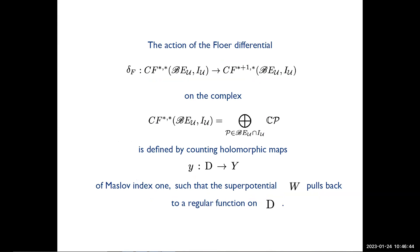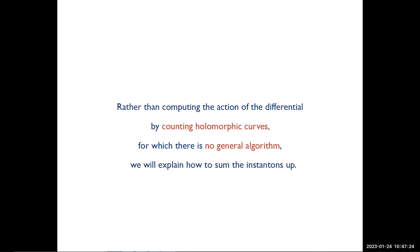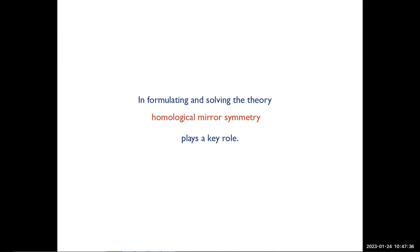The action of the Floer differential on the Floer complex is defined by counting holomorphic maps from a disk to Y of Maslov index 1, such that the superpotential W pulls back to a regular function on the disk. I remind you that the choice of top holomorphic form matters: it's important that the corresponding symplectic form is compatible with omega in the sense that the real volume form you get from omega wedge omega-bar is proportional to the one you get from the symplectic form. Rather than computing the action of the Floer differential by counting holomorphic curves — for which there is no general algorithm — we'll explain how to solve this. In formulating the entire theory, homological mirror symmetry plays a key role.